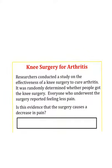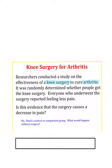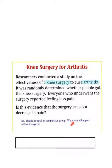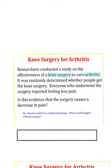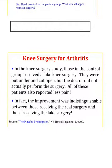Here is an interesting study on knee surgery to cure arthritis. Researchers did a random study where some people got the surgery and some didn't. Everyone who got the surgery reported feeling less pain, but is that enough evidence that surgery is actually helping? Actually, it's not, because we need a control group to figure out what would happen without the surgery. The researchers then had a control group where they gave people a fake knee surgery — they cut them open but didn't actually perform it — and all of those patients also reported less pain. The improvement was indistinguishable between those receiving real surgery and those receiving fake surgery. This is called the placebo effect, and if you want to hear more about it, take a look at the link I put on campus.